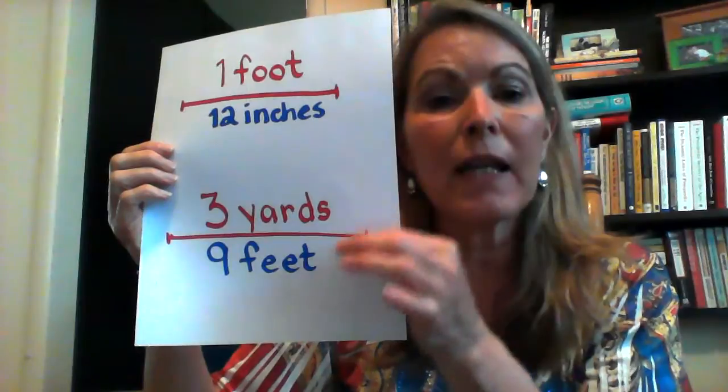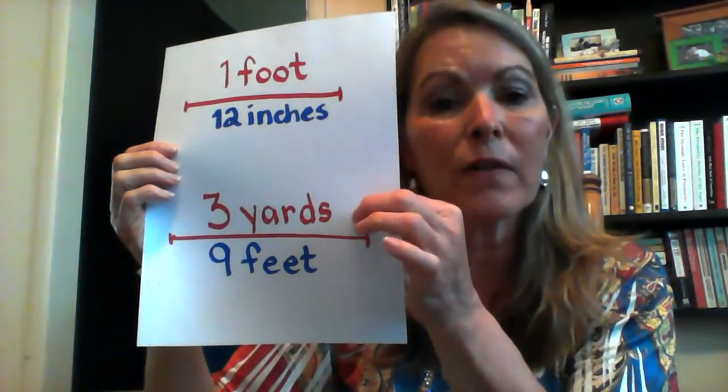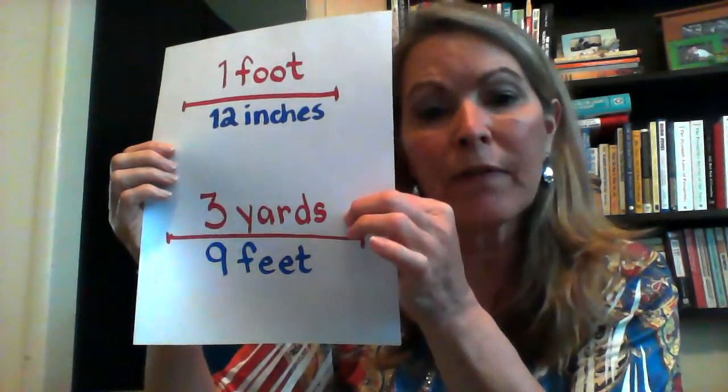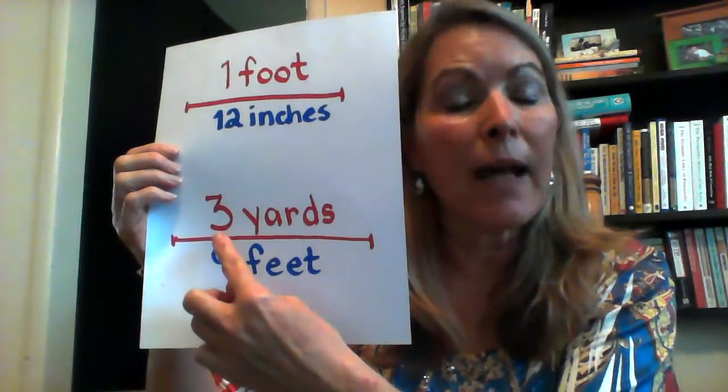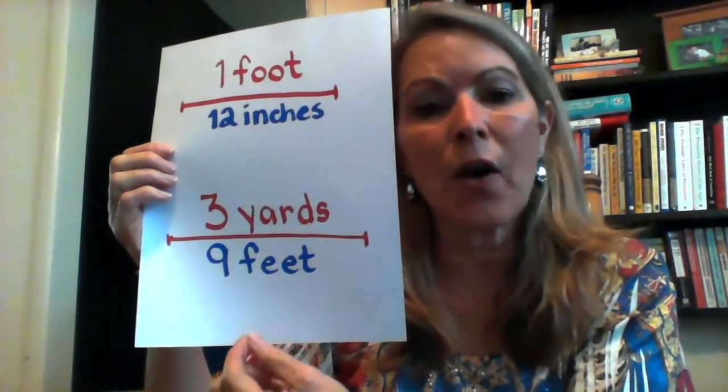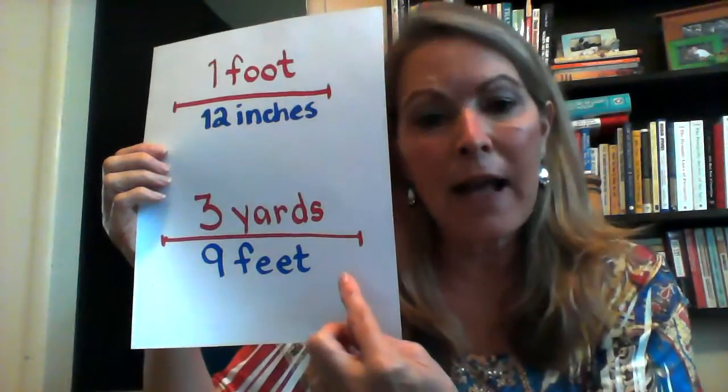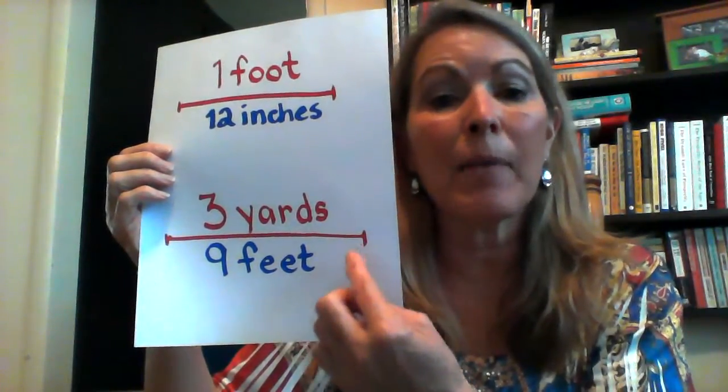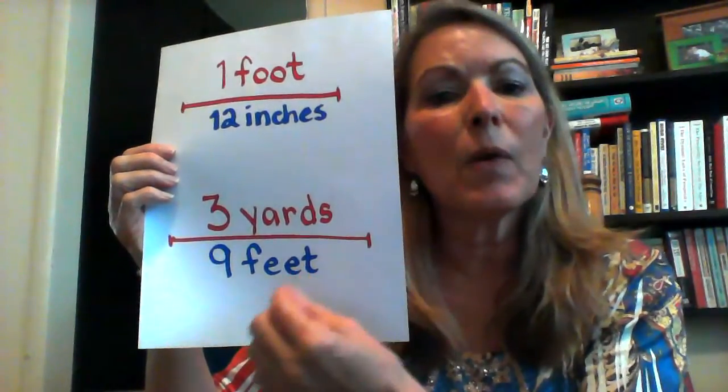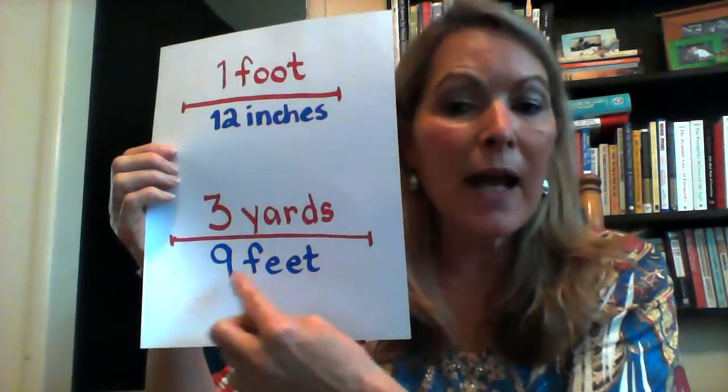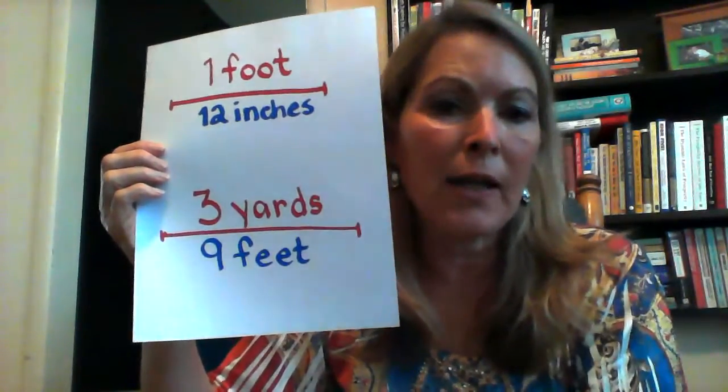So, once again, if we start with the larger yards and want to find out the equivalent feet, then we would need to multiply 3 times 3 because there's 3 feet in the yard. If we started out with the 9 feet and wanted to figure out how many yards that is, then we would need to divide the 9 feet by 3 and get 3 yards.